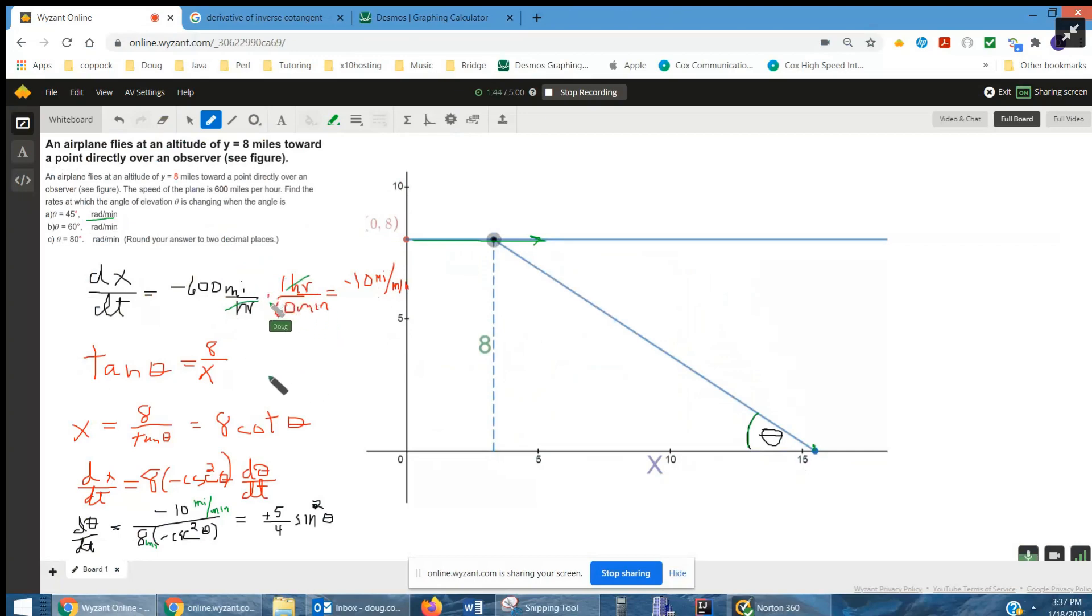Then there's different ways to set up the relationship between x and theta. We could actually solve this equation for theta using inverse tangent. Or we could say the cotangent of theta equals x over 8. I've just left it this way. But in the end, I ended up solving for x as 8 cotangent theta. And now if we take the derivative of all the variables with respect to time, this is a related rates problem.